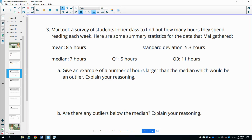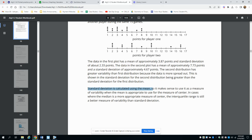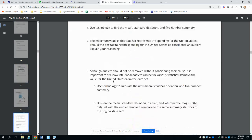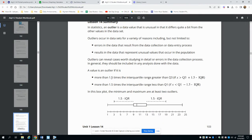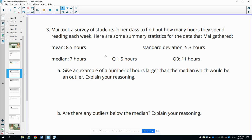Number three: Mai took a survey of students in her class to find out how many hours they spend reading each week. Here are some summary statistics for the data that Mai gathered. Give an example of a number of hours larger than the median which would be an outlier. Explain your reasoning. You could look back into your lesson summary to remember what an outlier is considered. An outlier is more than one and a half times the interquartile range above Q3. We want to figure out what the interquartile range is and then add it to the Q3 value.